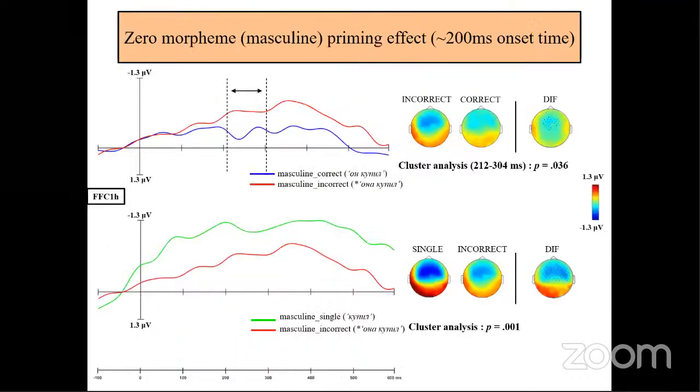If we look closer to the correct and violated conditions with zero FX, if we think that zero morpheme exists, then there should be preactivation of it as standard for other affixes. And so this will appear at early stages, so the differences between correct and violated conditions will appear early. And here we can see the results of cluster analysis showing that the onset of these differences occur really early around 200 milliseconds.